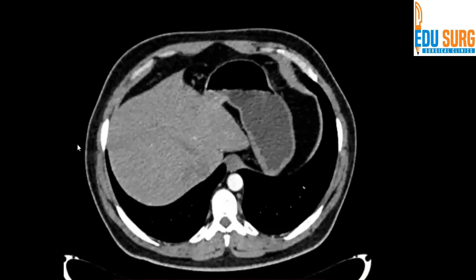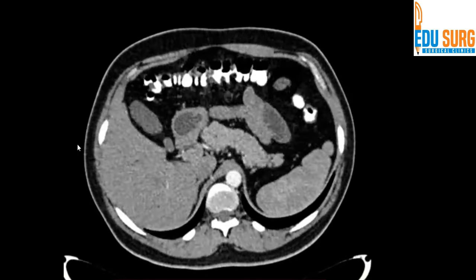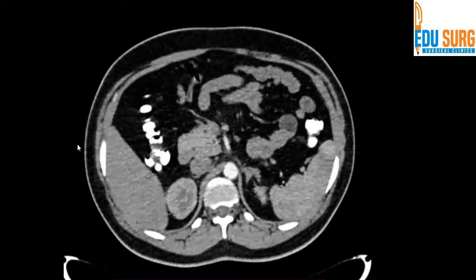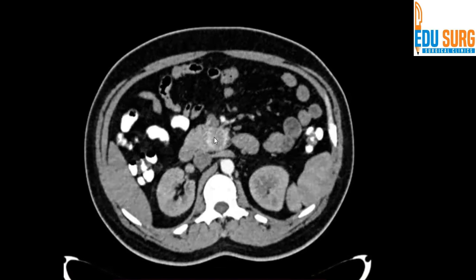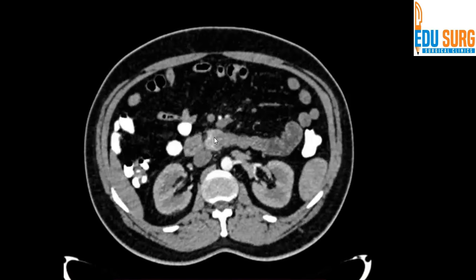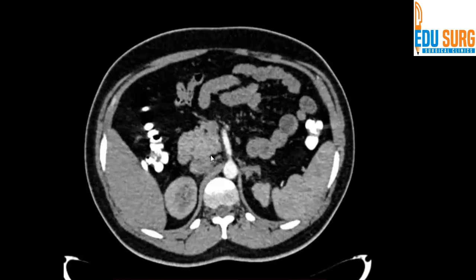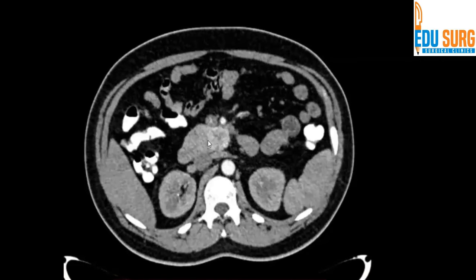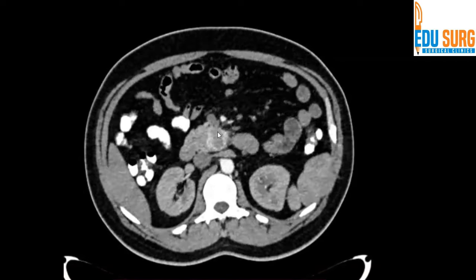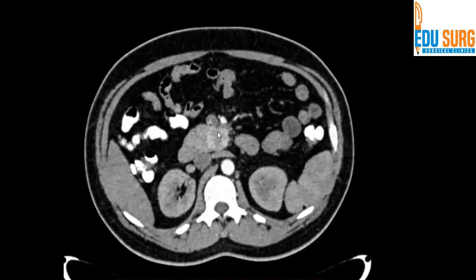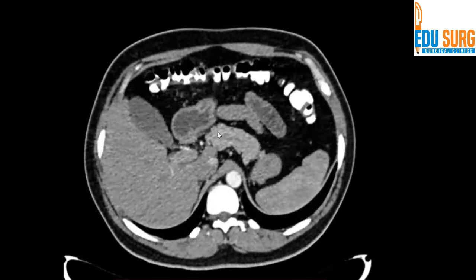Let us see what you may have missed and what you may have identified very easily. I am sure most of you have identified that there is an arterially enhancing lesion, probably in the uncinate process. This is the pancreas — so probably in the uncinate process, or it is a lymph node in that area. I am saying it could be a lymph node because of one other finding that can probably be missed if the scan is not seen properly.